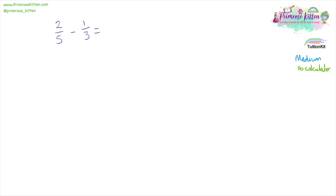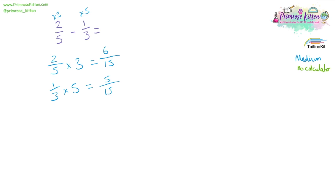Two over five minus one over three. I'm going to times this one by three and this one by five. Two over five times three: two times three is six, five times three is 15. One over three times five: one times five is five, three times five is 15. So I'm doing six over 15 minus five over 15, which gives six minus five over 15, equalling one over 15.